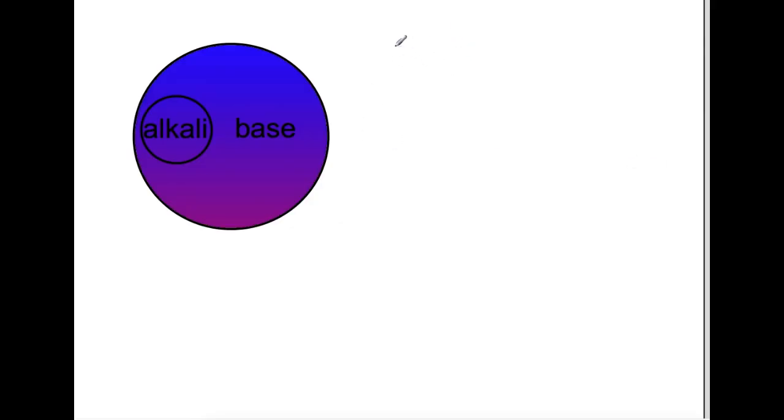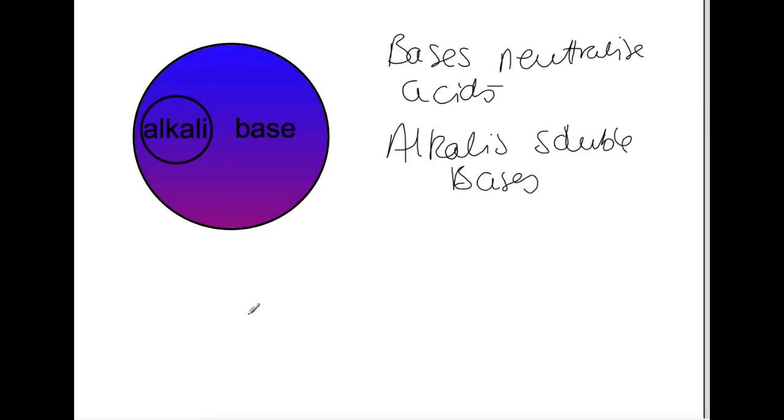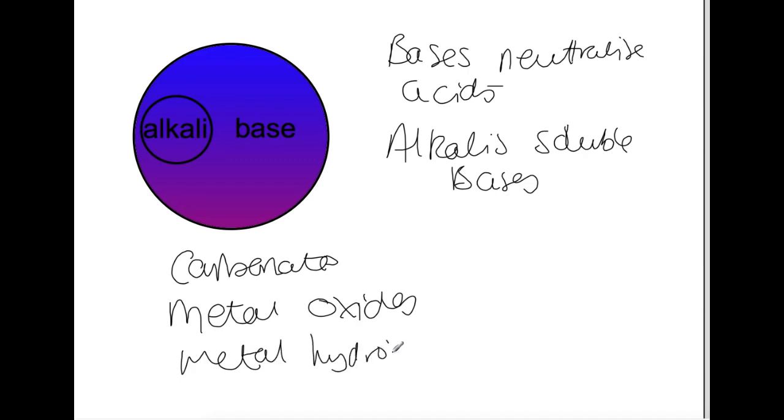Bases are substances which neutralize acids. Alkalis are soluble bases. So things that can neutralize acids are carbonates, which tend to be insoluble, metal oxides, metal hydroxides which are usually soluble and thus alkalis. All of these can neutralize acids.